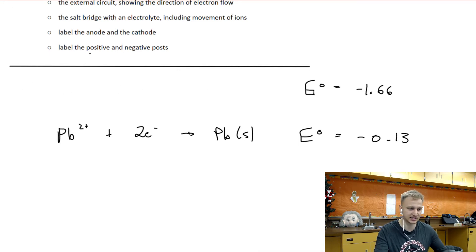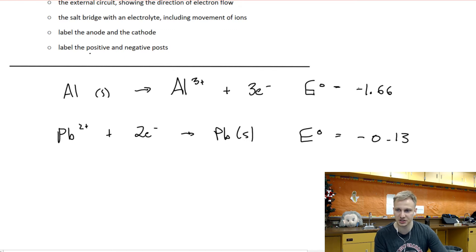And so what we end up doing is we end up flipping one of these reactions. And we end up flipping whatever one is more negative, has a more negative potential difference. So we're going to flip this aluminum reaction. We're going to do the exact same reaction, but now I'm just writing it in the reverse direction. And the reason that we do that is in order for this reaction to be spontaneous.